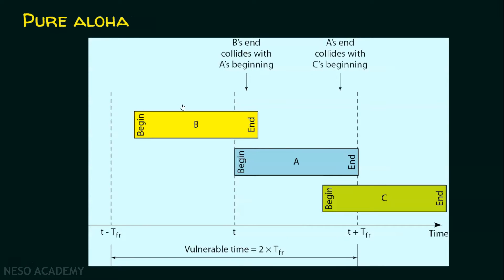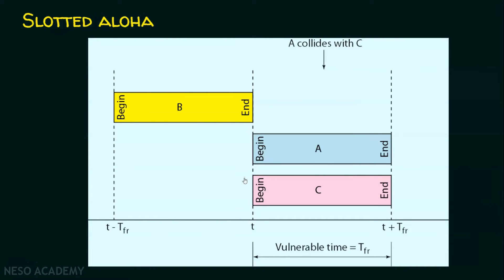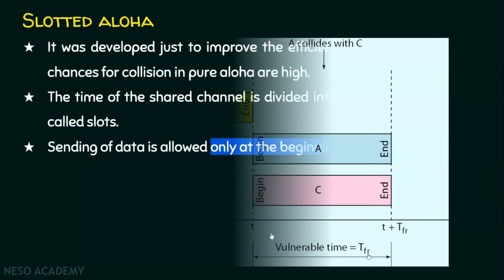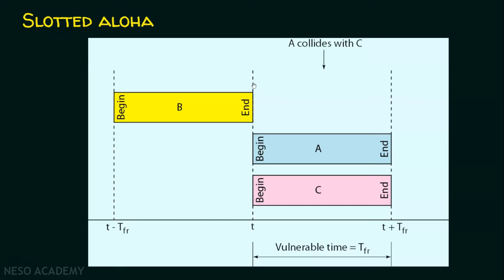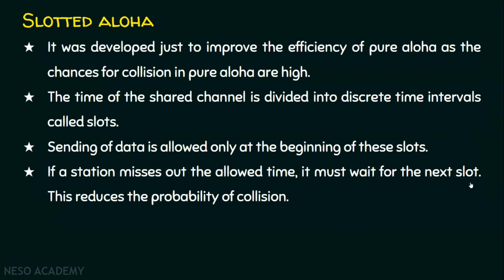How does slotted aloha differ from pure aloha? In pure aloha, there are no time slots and a frame can be transmitted at any time, so the vulnerable time is two times the frame transmission time. Whereas in slotted aloha, we have time slots and sending is permitted only at the beginning of the time slot, so the vulnerable time is just the frame transmission time. If a station misses the allowed time slot, it must wait for the next time slot. This reduces the probability of collision.